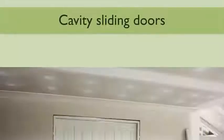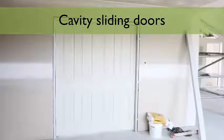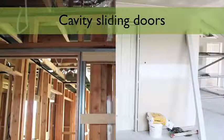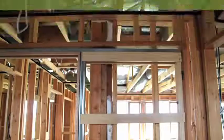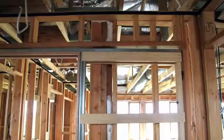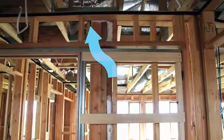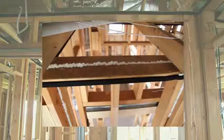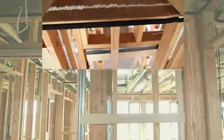Typically located within an internal wall, cavity sliding doors are installed during the framing stage, and in many cases they create an open air path to the ceiling space or external walls. You can either install weather strip at the top and sides of the cavity, or seal all gaps between the stud work and the header to resolve the issue.